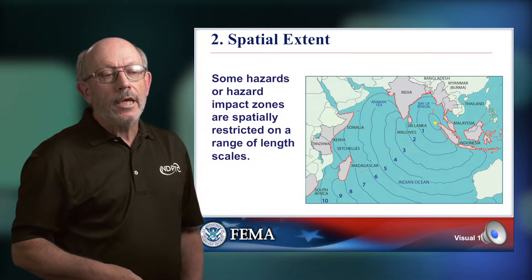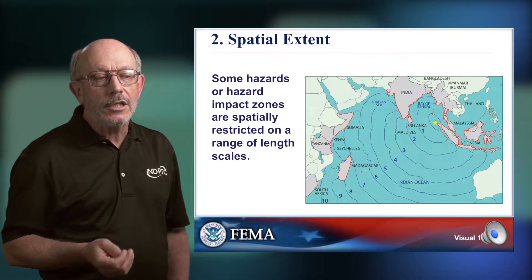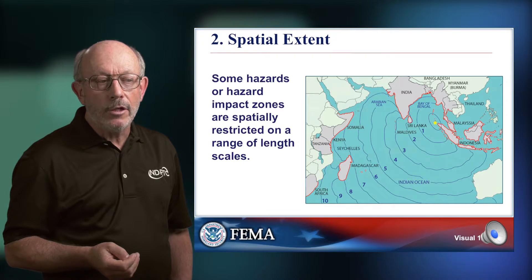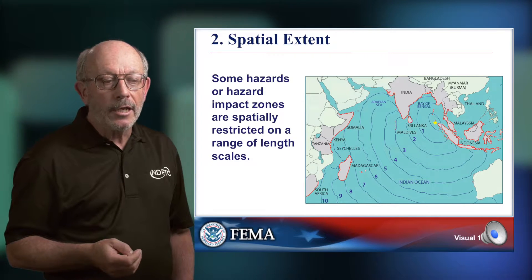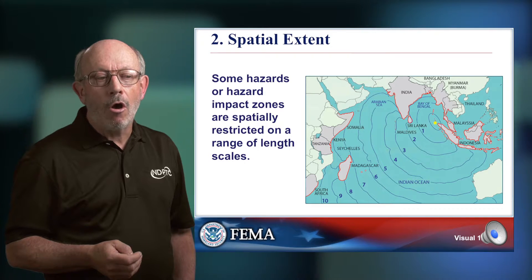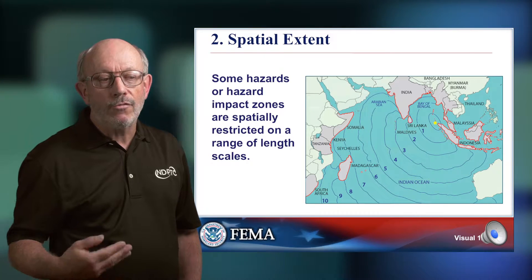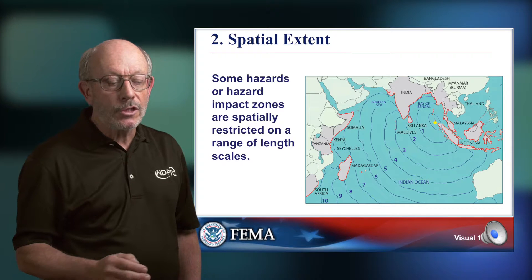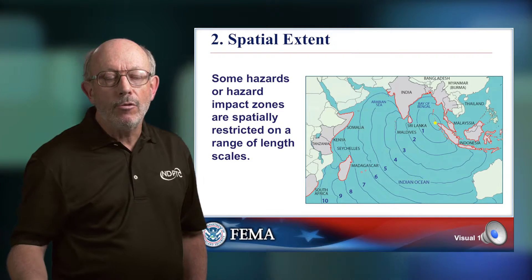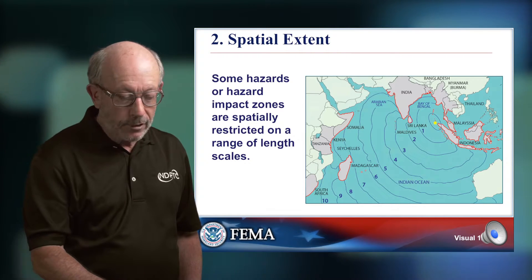The second characteristic is that the spatial extent of events can be very different. Some are limited to a very narrow single region. Tsunamis, on the other hand, are limited to the coast of a much larger region. So the whole response is very different for tsunamis because, for example, all of India has an opportunity to contribute to the recovery of the coastal zone affected by the event.